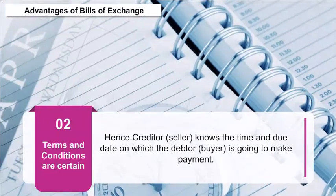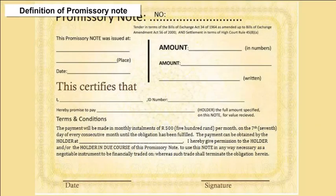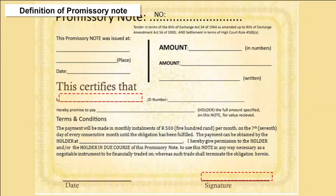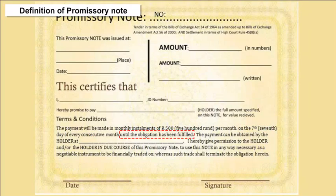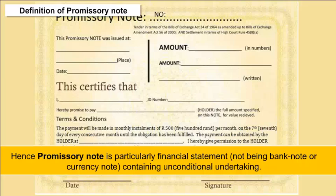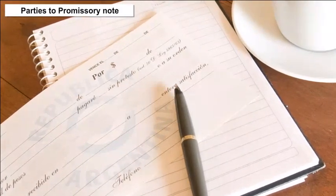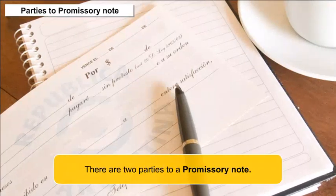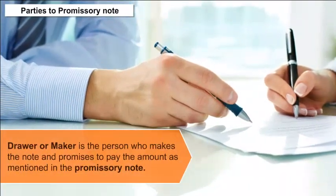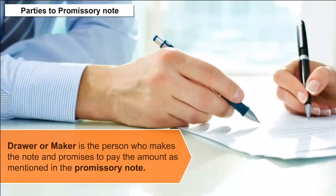Promissory Note: A promissory note is a legal instrument in writing in which one party, the maker or issuer, promises to pay a certain amount of money to the other party, the payee, on a specified date under specific conditions. It is a financial instrument but not a bank note. There are two parties to a promissory note: the drawer or maker, who makes the note and promises to pay the amount mentioned in the document.